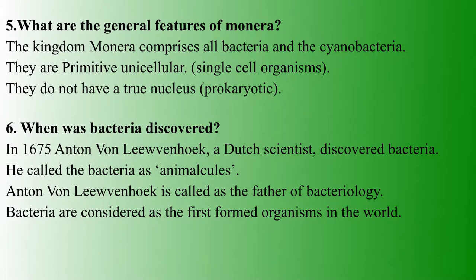What are the general features of Monera? Monera includes all bacteria and cyanobacteria. All organisms in this kingdom are primitive unicellular organisms — that is, single-celled organisms. They are prokaryotic, meaning they lack a true nucleus.